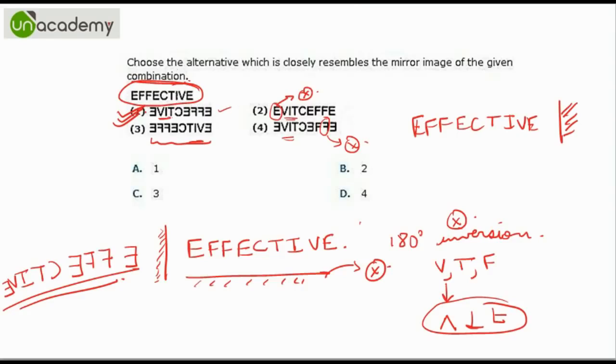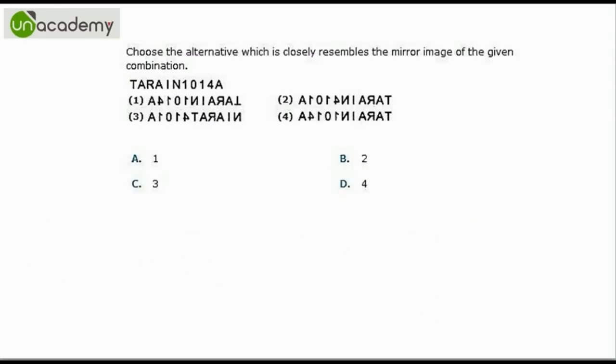So the correct option choice is option one. Option C is incorrect because they have taken the inversion like this only, but they have again shifted every letter. Like after taking this inversion if you start off the word from here reading from here and then place it, you will get option three but that is not the correct mirror image. So option one is the correct choice. Let us look at one more example.